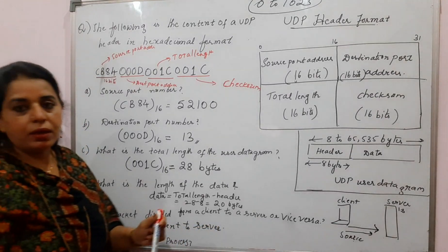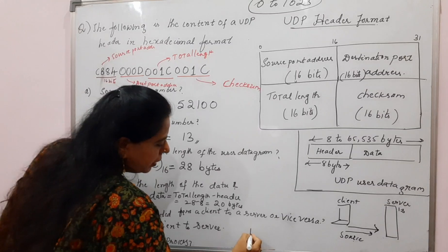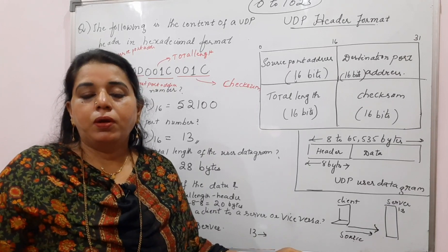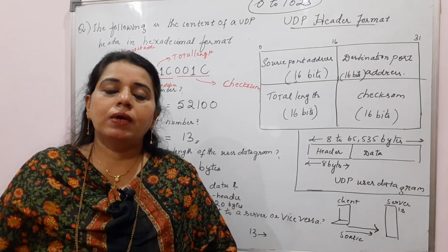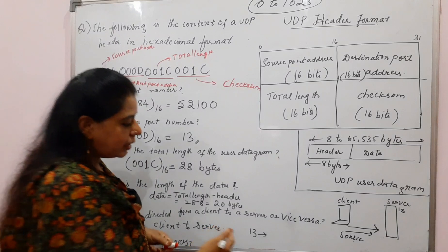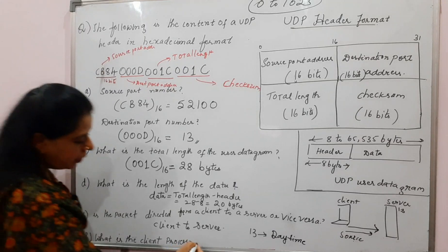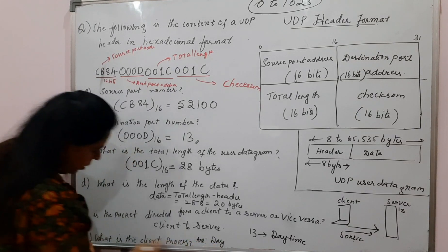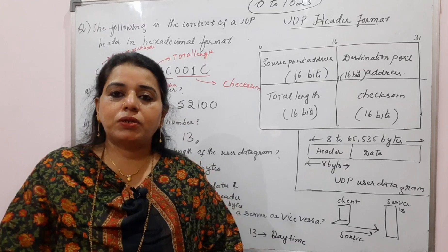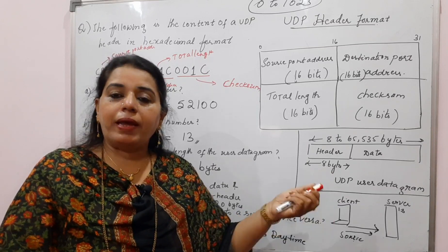What is the client process? Port number 13 is assigned a specific process name — you should remember this from the table in the textbook that lists popular port numbers and their corresponding process names. Port 13 is assigned the process name 'daytime'. So the server process is daytime. The client is making a request to the server, and the server replies using the daytime process.